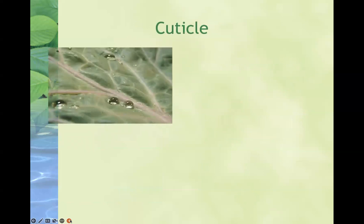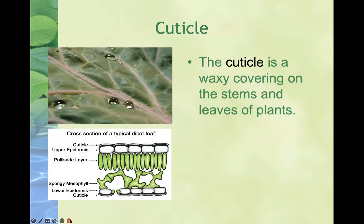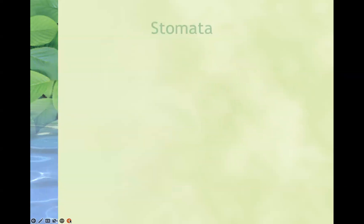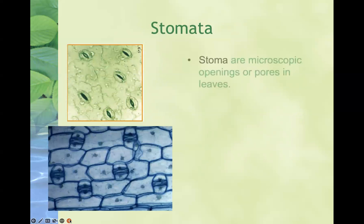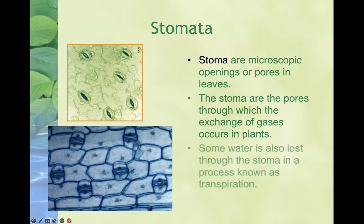The cuticle is a wax covering on the stems and leaves of the plant. This cuticle prevents water loss in plants and helps to retain the water being transported up to the leaves. The stomata are little openings or pores present in the leaves of the plant. The stomata are the pores through which gas exchange happens in plants. Some water is also lost through the stomata in a process known as transpiration.